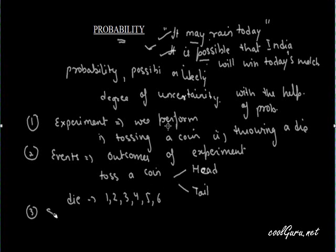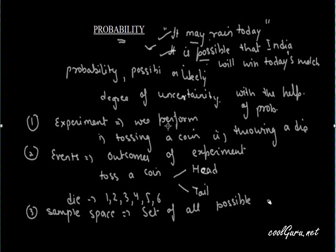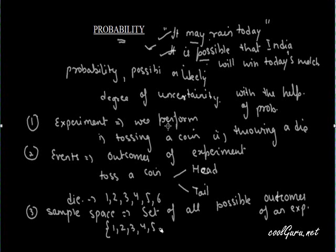The third term is sample space. Sample space is the set of all possible outcomes of an experiment. For example, when we throw a die, the sample space is the set of all possible outcomes: one, two, three, four, five, and six.